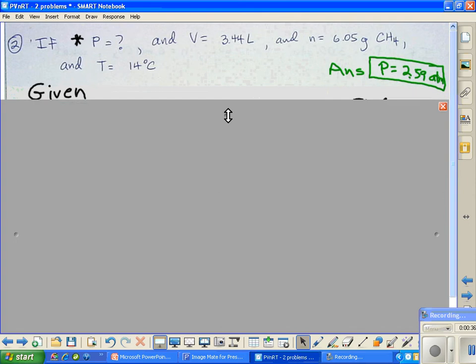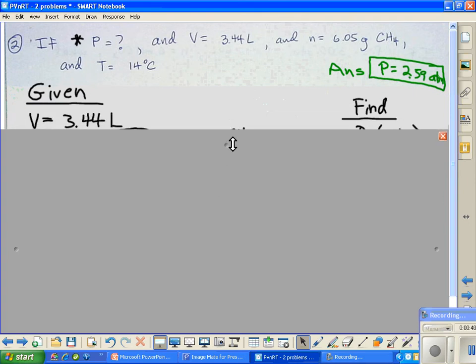Now let's go ahead and take these one at a time. We'll do our given. First of all, we're given a volume of 3.44 liters. With a volume of 3.44 liters, we're fine. We can use that in our calculations because that's on the accepted list.